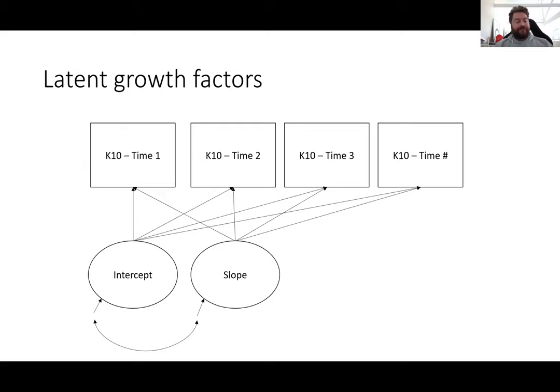We incorporate predictors like intervention versus control group to see whether those groups differ in terms of intercepts. For a properly randomized trial, we'd like to see no difference in intercepts, since people should start at the same level. But we'd want to see a difference in the slope — for a K10 measure, we'd want the intervention group to show greater decrease compared to control, depending on the intervention being tested.